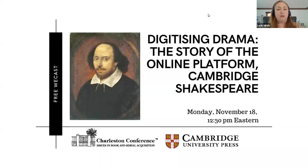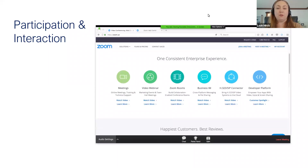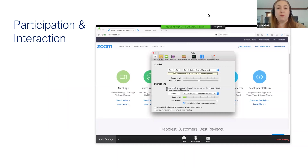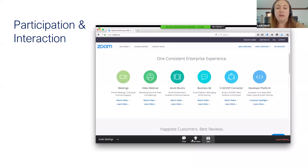Before we get started, I have a few announcements. We're using the Zoom platform. The best audio quality is if you connect with your computer speakers instead of telephone audio, though there is an option to connect by phone. You can raise your hand using the icon at the bottom of the screen if you have an issue, but the best method for technical issues or questions is to use the attendee chat — you can direct messages to me or to the presenters.